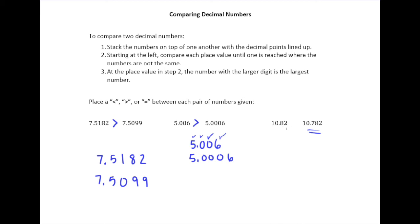And also using the same strategy we did in the previous two, lining up place values and following those rules, the first place these differs in the tenths place, and the 8 is bigger than the 7, so 10.82 is definitely bigger than 10.782.